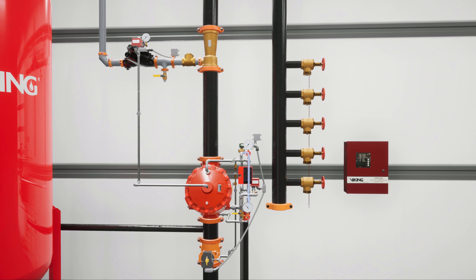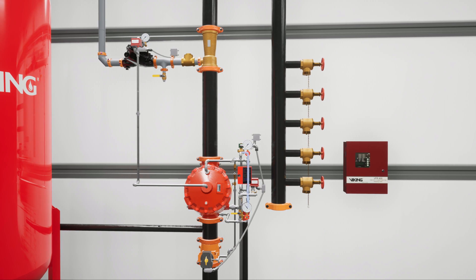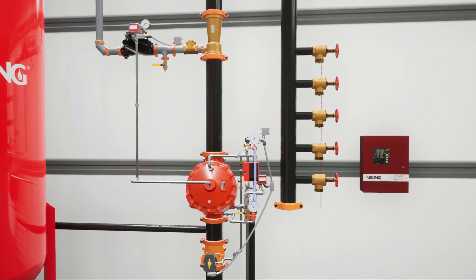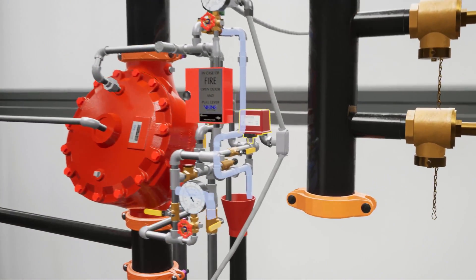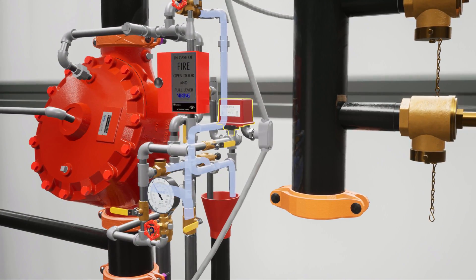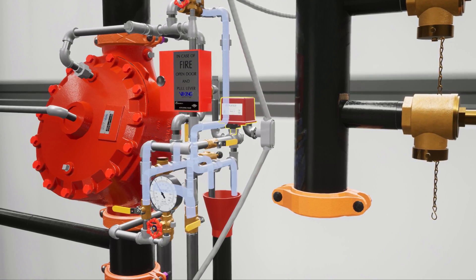While the next steps happen in parallel, we're going to look at the water side of the system first. Once the deluge valve is open, water will fill the trim and activate the water flow alarm.